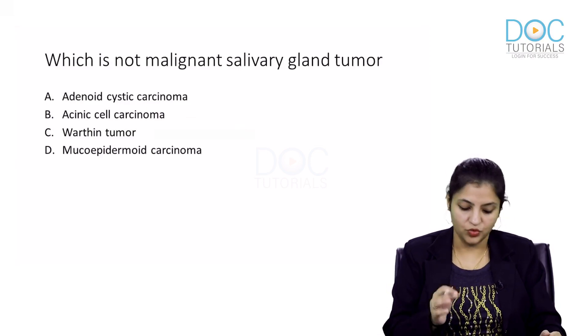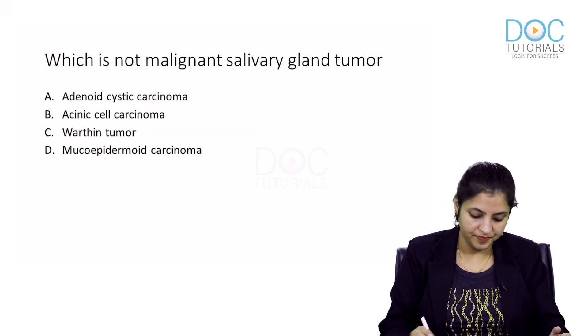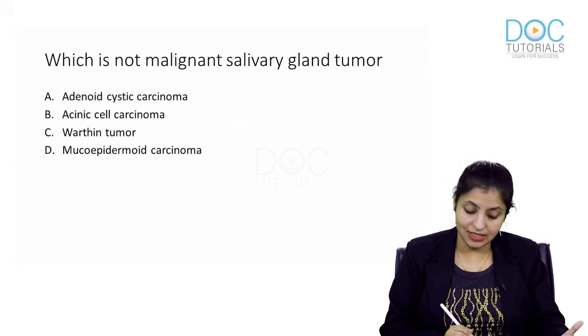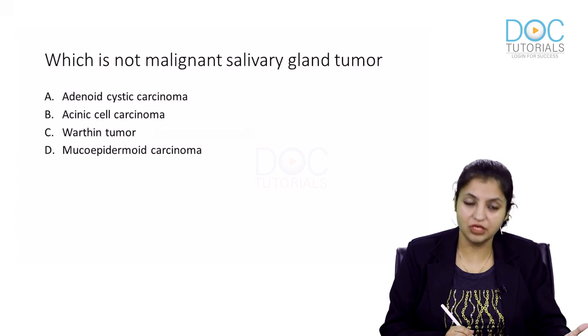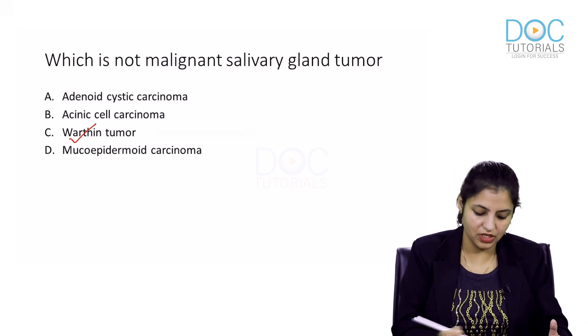First question, simple, very easy. Which is not a malignant salivary gland tumour? The options are adenoid cystic, acinic, Warthin, and mucoepidermoid. The answer is Warthin.